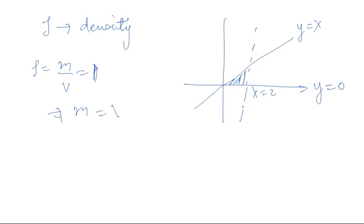This implies that m = V. The volume of the cone—we know the volume of a cone V = (1/3)πr²h. dV is the small volume element.